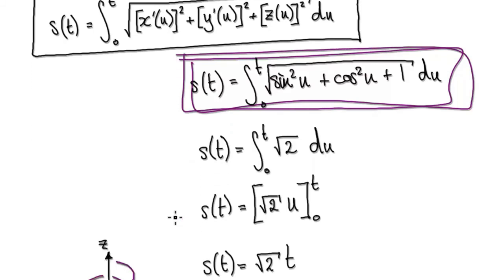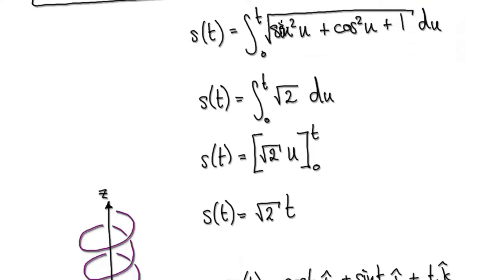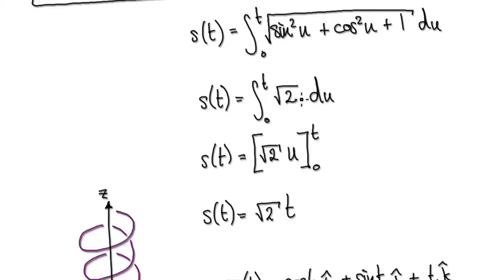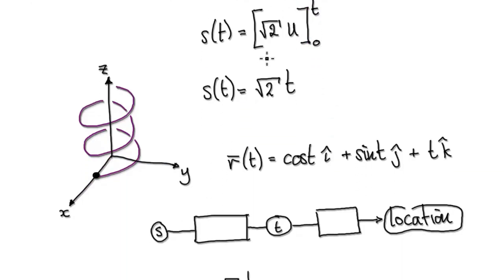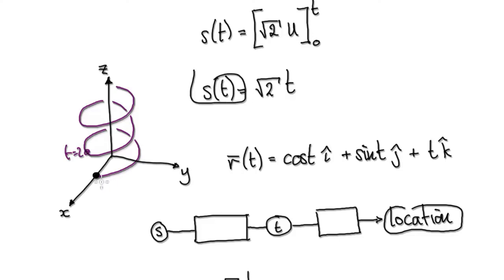So now we tidy this up. This thing here will be one. One plus one will be two, so that will be square root of two. Integrate it with respect to u — that will give us this. Now we can put t in — remember, t is a variable. We can put t into here, and then take away, put zero into here. That will give us this. Now we've got a formula where, for a given time, we will immediately know the arc length. So let's say t equals two — this gives us the distance travelled along that path after two seconds.